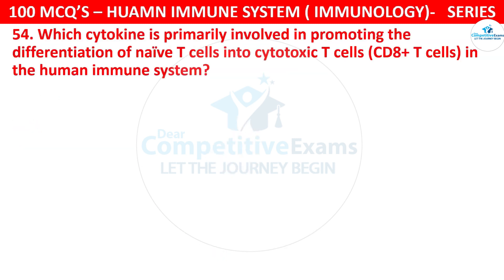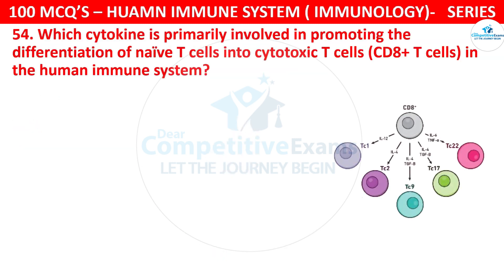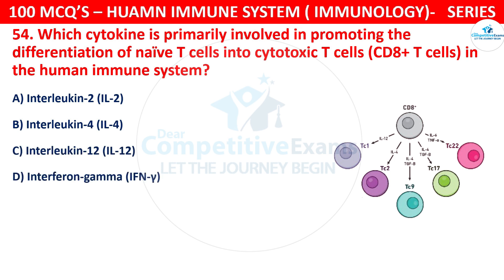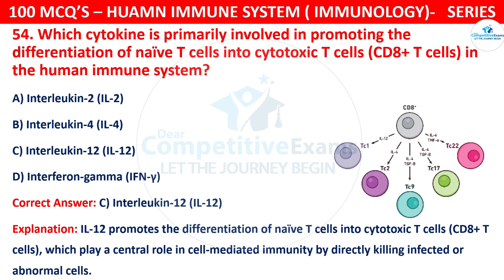Question number 54. Which cytokine is primarily involved in promoting the differentiation of naive T cells into cytotoxic T cells (CD8+ T cells) in the human immune system? The options are interleukin-2, interleukin-4, interleukin-12, or interferon-gamma. The correct answer is C, that is interleukin-12. IL-12 promotes the differentiation of naive T cells into cytotoxic CD8+ T cells, which play a central role in cell-mediated immunity by directly killing infected or abnormal cells.